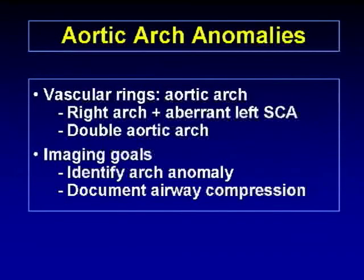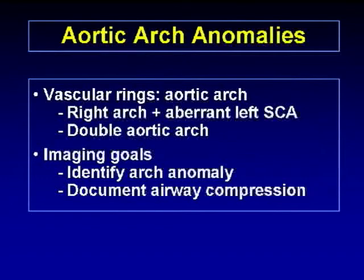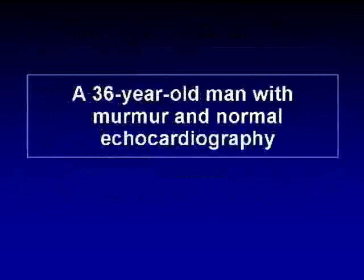To review: aortic arch anomalies that can cause vascular rings include a right aortic arch with an aberrant left subclavian artery and a double aortic arch. The imaging goals are to identify the arch anomaly and to document airway compression.